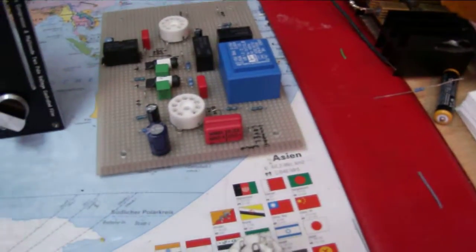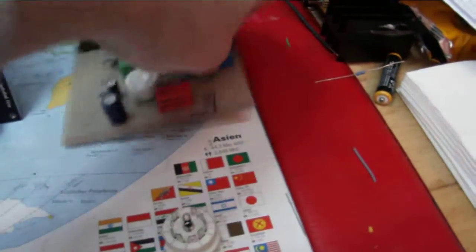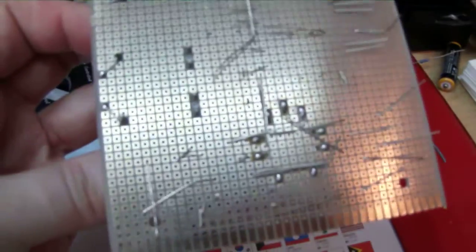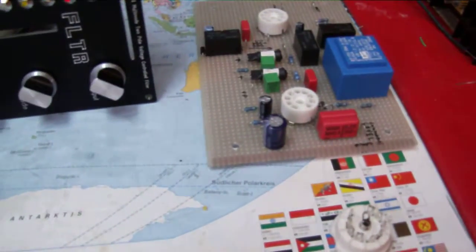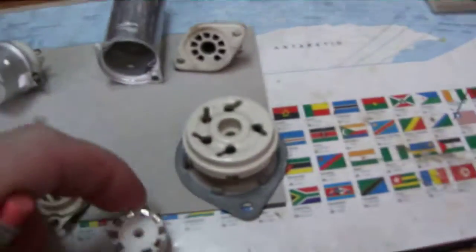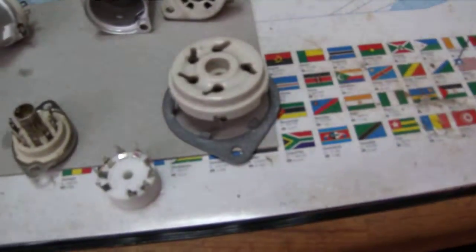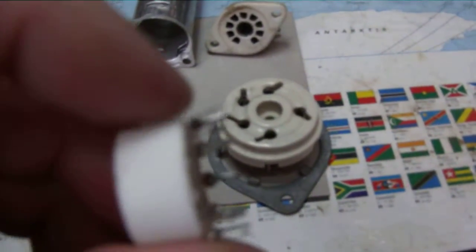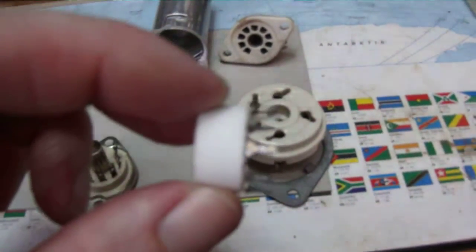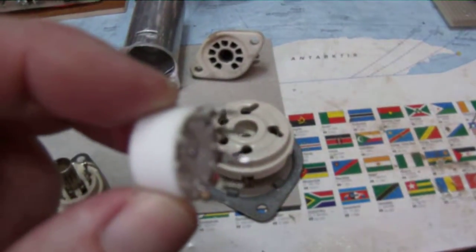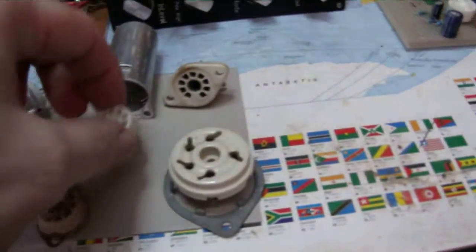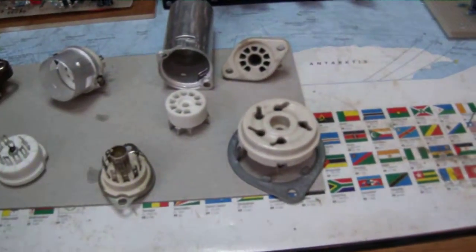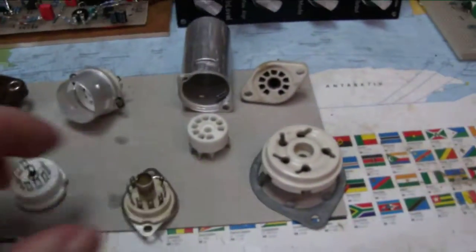This is one I just soldered together, and this is how it looks underneath. This is the smallest one you can get nowadays. If you flip it upside down, you see the solder pins.